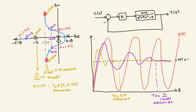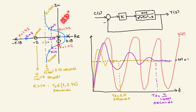Poles closest to the imaginary axis play the more dominant role in determining the closed-loop settling time. Since two poles have imaginary components, the overall system response also oscillates. In this example, for gain k greater than 1.72 the closed-loop system is stable; at k equals 1.72 it is marginally stable; and for k less than 1.72 the system is unstable.